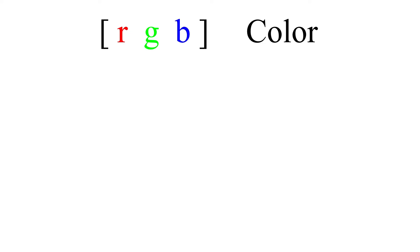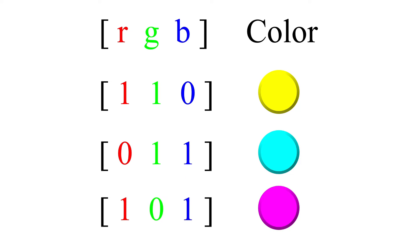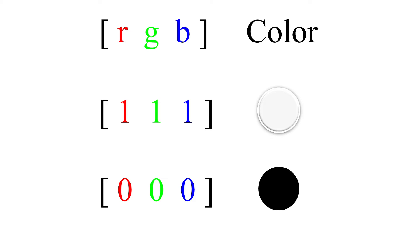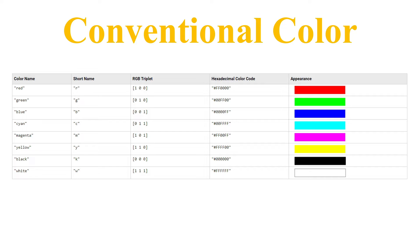We can mix and match these colors. For example, if we mix red and green, we get yellow. If we mix green and blue, we get cyan. And if we mix red and blue, we get magenta. If we mix all three colors, we get white. If we mix none of them, we get black. For these conventional colors — the eight colors I just showed you — MATLAB provides a color name as well as a short name. The short name is just the first letter of the color name, except for black, which uses the last letter 'K' to avoid confusion with blue, since both start with B. So blue's short name is 'b' and black's short name is 'k'.